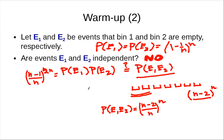Intuitively, if bin 1 is empty, all the balls fall into the remaining bins — it's as if you have one fewer bin. So the probability that bin 2 is also empty becomes lower than before, because there are effectively more balls concentrated in fewer bins. This means these events are not independent, and it gets worse if you have three or four such events.